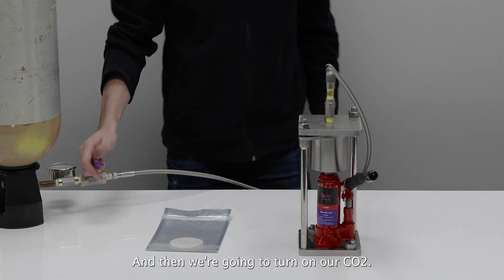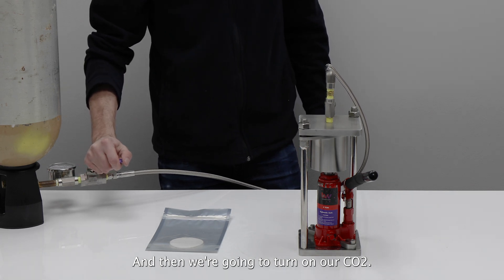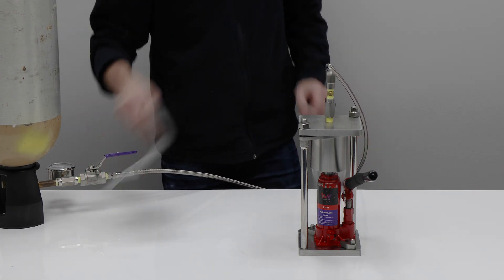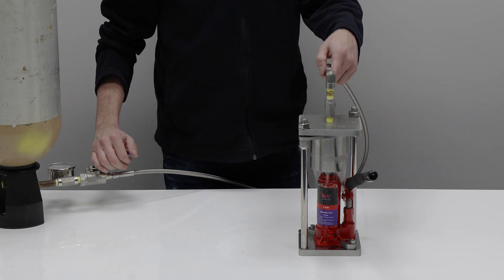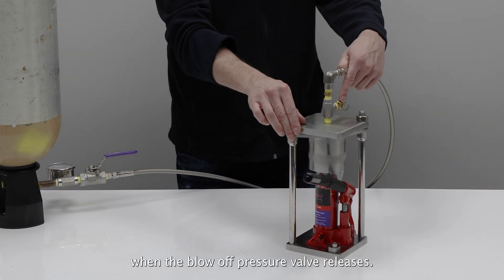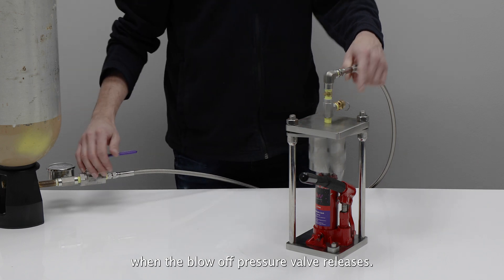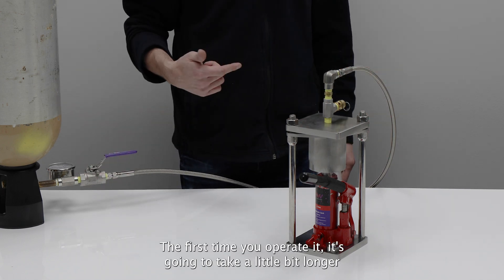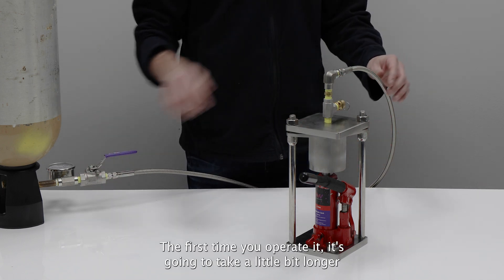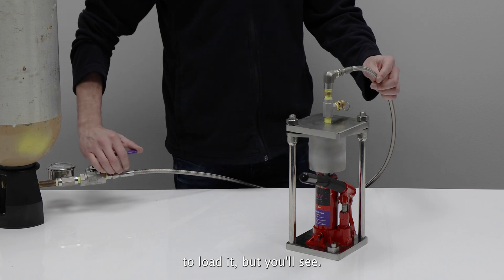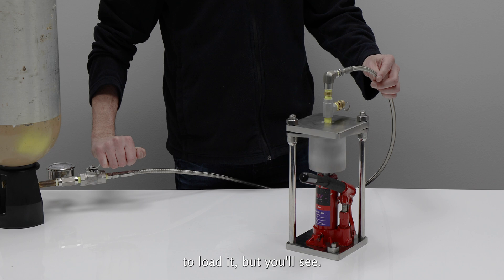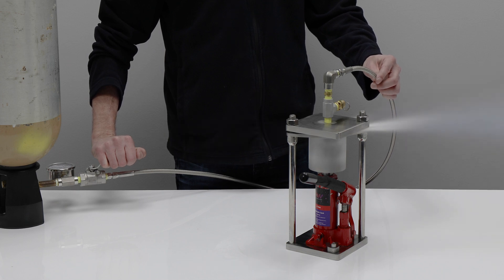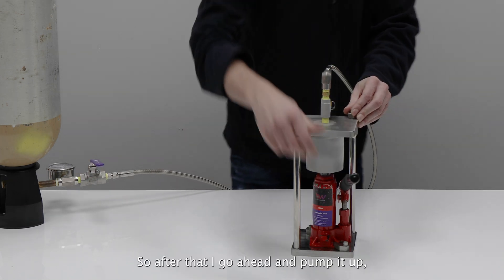And then we're going to turn on our CO2. You'll know when to stop when the blow off pressure valve leaks. The first time you operate it, it's going to take a little bit longer to load it, but we'll see. That's all there is to it.